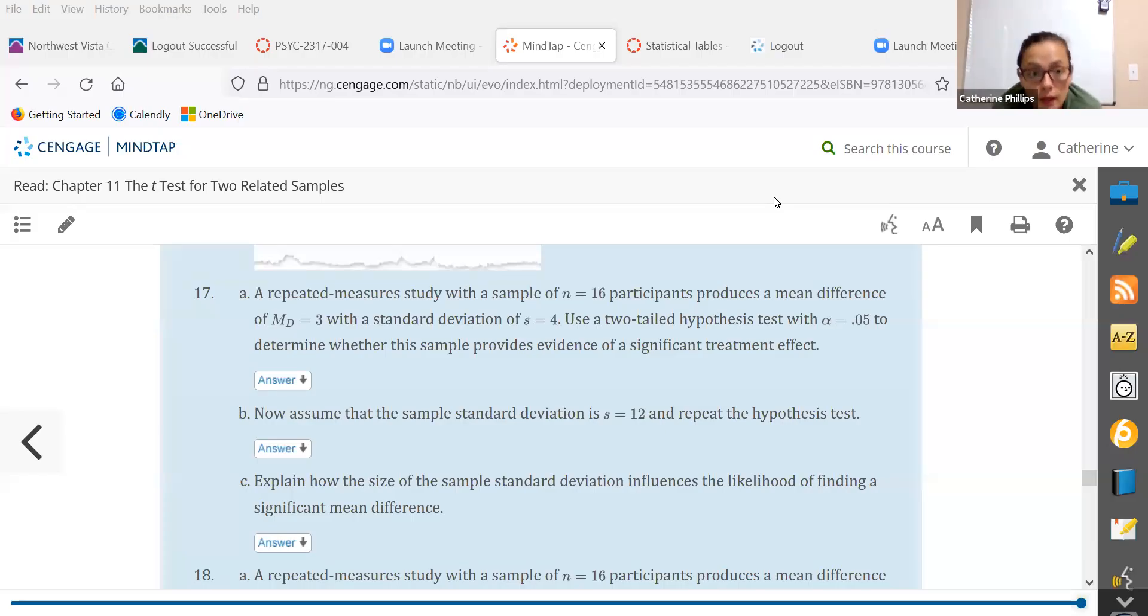I'm going to do a Chapter 11 t-test for two related samples demonstration. I'll do each one in a separate video, and in addition to doing questions A through C, I'll also do effect size measures, all three: Cohen's D, R squared, and a confidence interval.